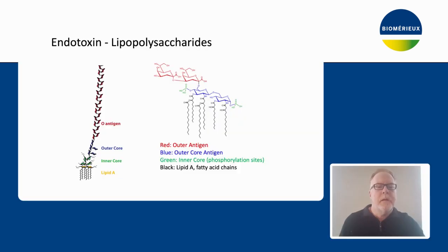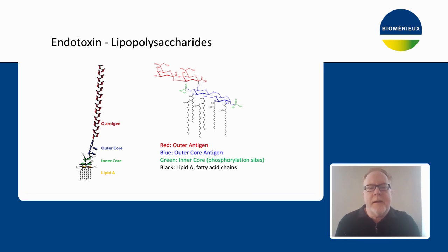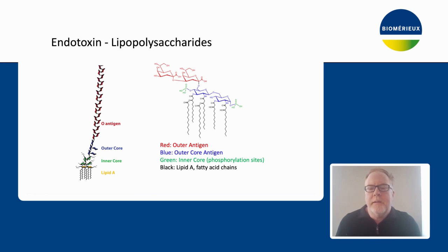So Kevin, what is endotoxin? Endotoxins are also called lipopolysaccharides, which means the molecules have both a sugar and a lipid moiety. They exist only in the outer membrane of gram-negative bacteria.